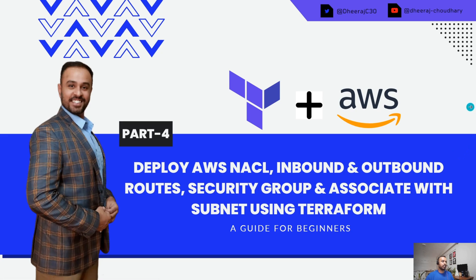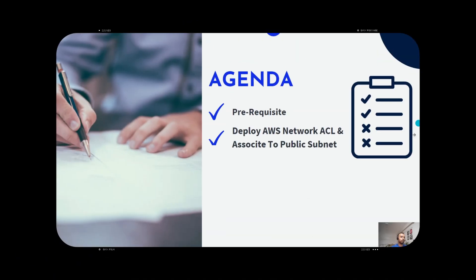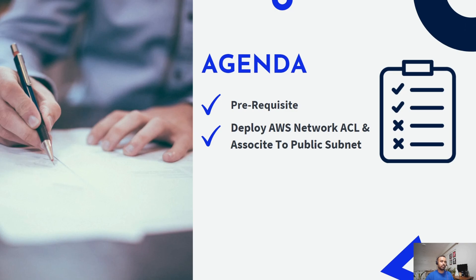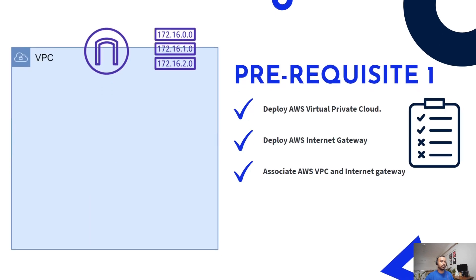Let's run through the agenda for today. We will understand the prerequisites needed before trying this tutorial, and then we will deploy the AWS Network ACL. The first prerequisite is that we have to create a Virtual Private Cloud, along with an AWS Internet Gateway, and then associate them. The main route table, once you create an entry of this Internet Gateway, makes the association with the VPC.